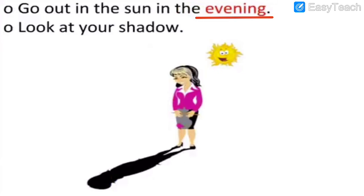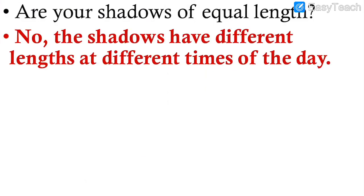Did you notice any particular pattern in morning and evening shadows compared to the afternoon shadow? Do we have shadows of equal length all the time? No — the shadows have different lengths at different times of the day. In the morning, evening, and afternoon, the shadows are not of equal length; they are of different lengths — sometimes longer, sometimes shorter.